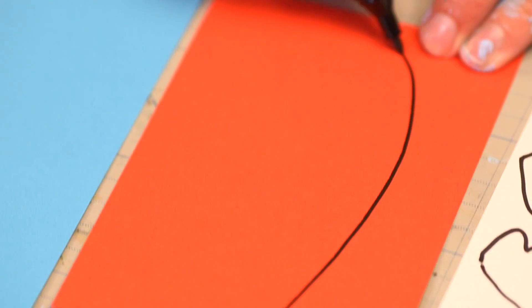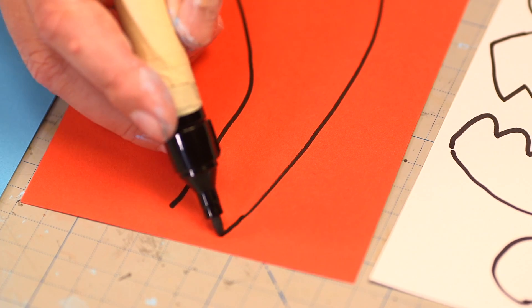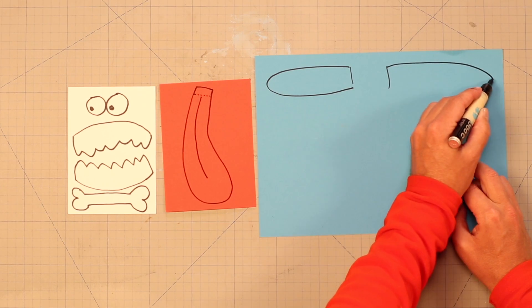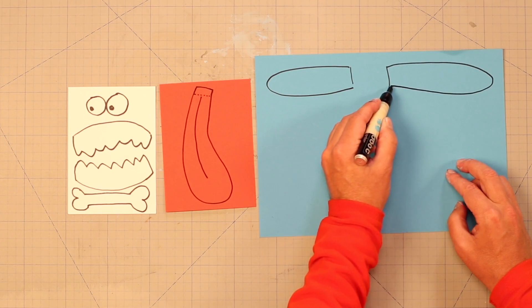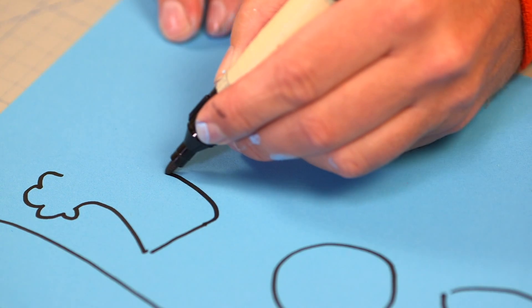We continue with the red paper. Tongue, big one too, and ears on the blue paper. Then arms and eye patch, followed by legs and tail.